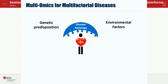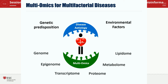What that means for multifactorial disease in particular is that yes, we need the genetic information to determine genetic predisposition, but we also need to capture the interaction of the genome with the environment, and this cannot be done by genetics alone. We need additional layers of information, and these include the proteome, the metabolome, the lipidome, the transcriptome, and you'll also hear about the epigenome.